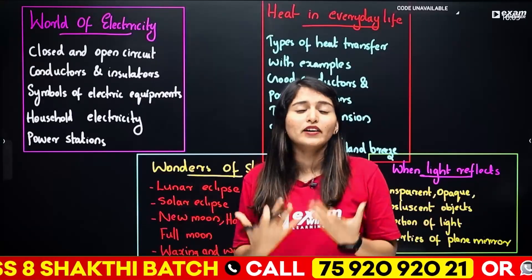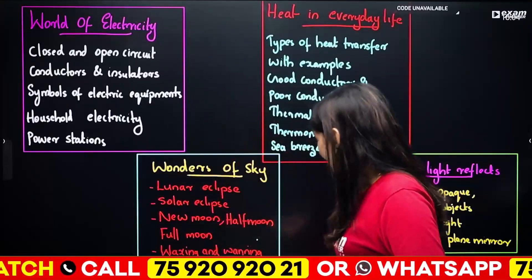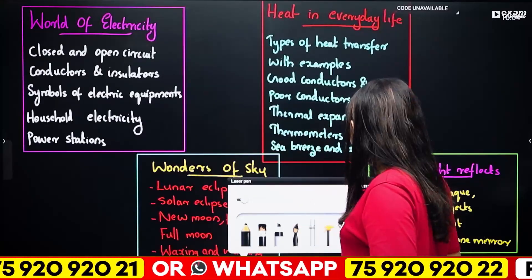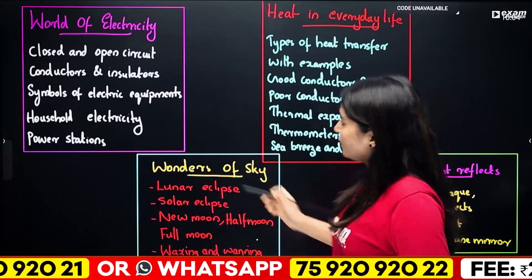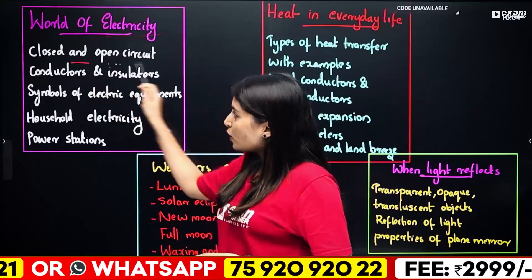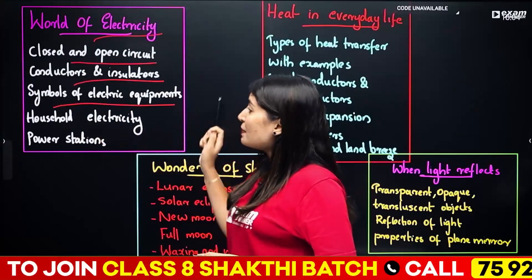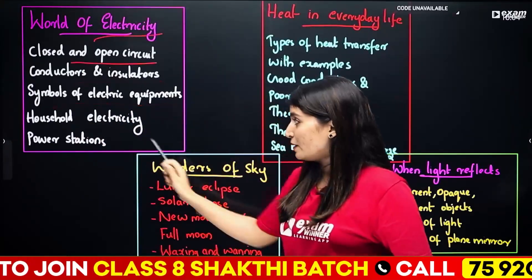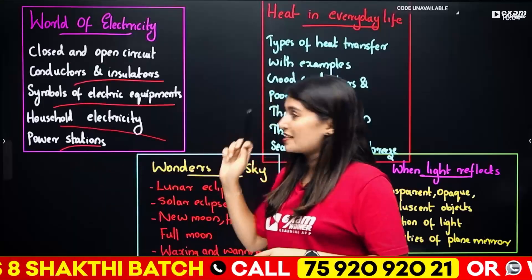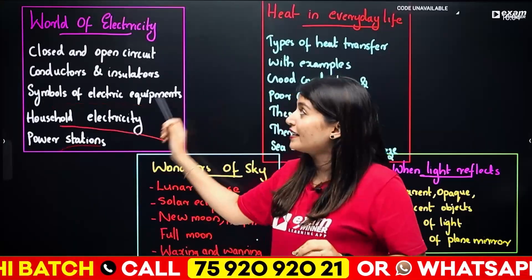Because I will ask you questions about this. Mr. Karni, we will go to one chapter. First, World of Electricity: in this chapter — closed and open circuit, conductors and insulators, symbols of electric equipment, household electricity, power stations. These topics are important.